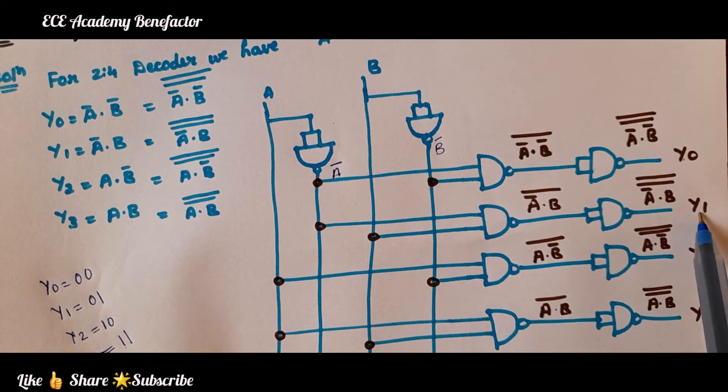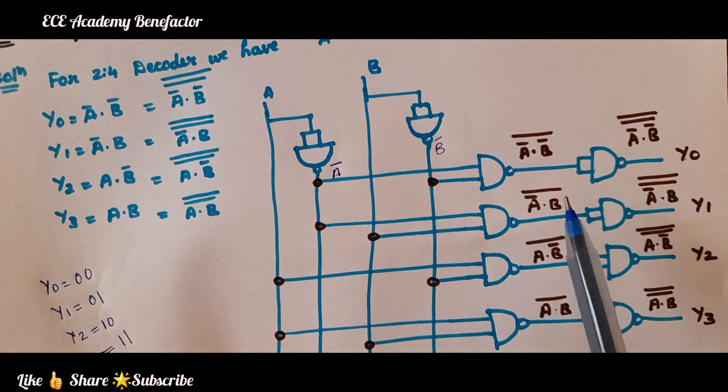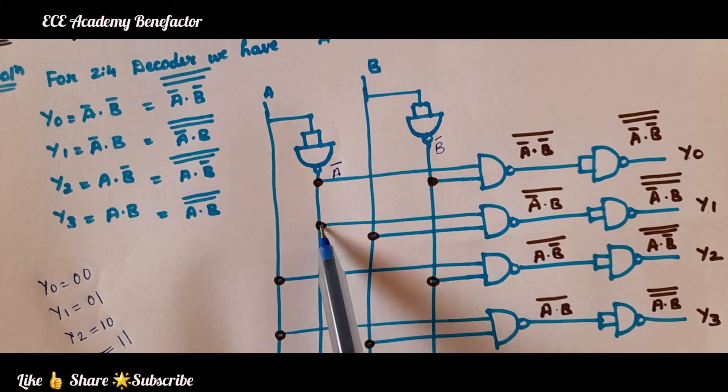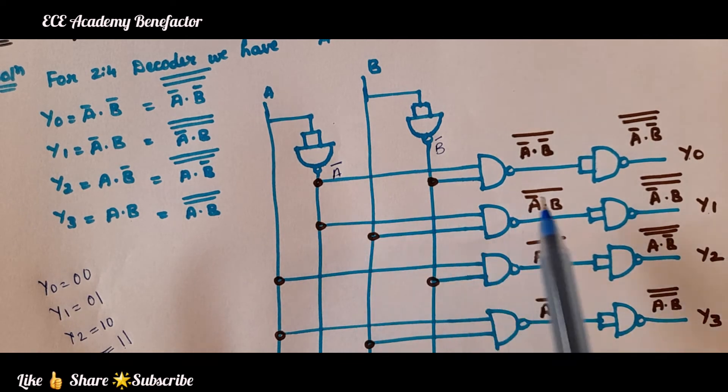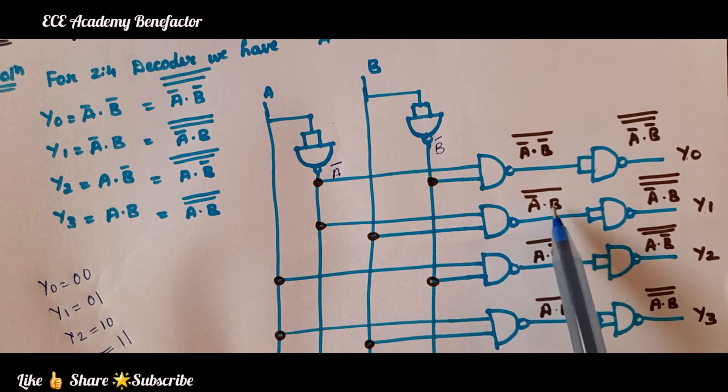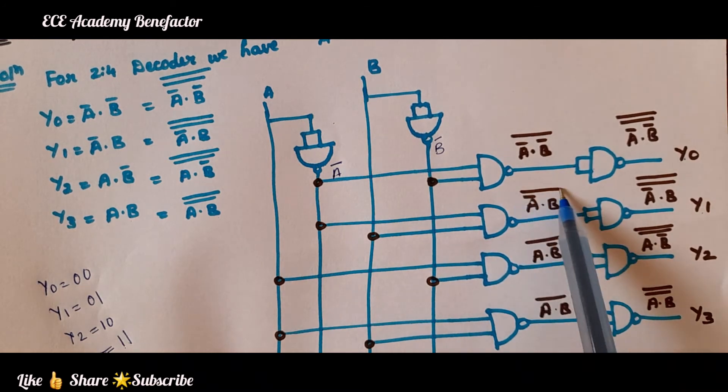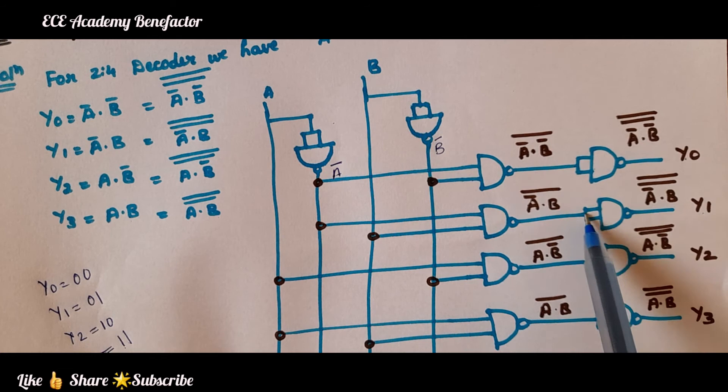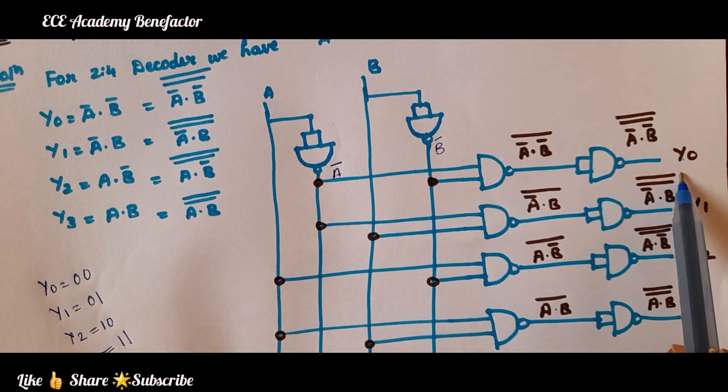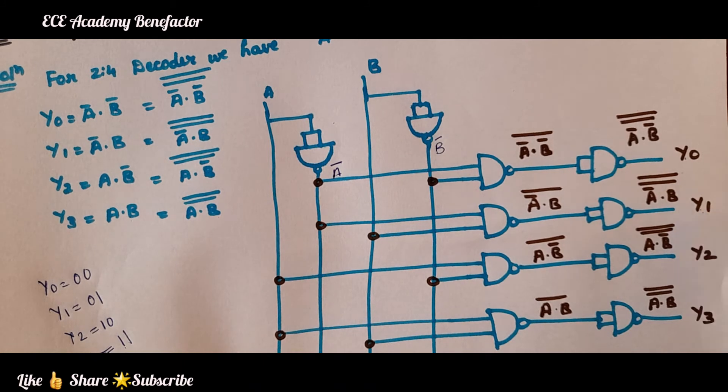Now, we need to get y1. y1 we will connect A̅. This is A̅ and this is B. We have given it to a NAND gate. It becomes A̅·B bar and then again giving it to NAND gate, this bar will become double bar which is equal to y1.